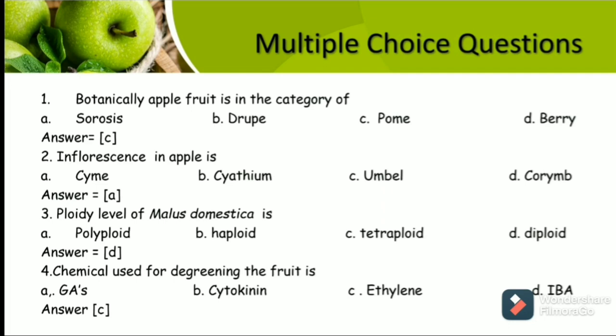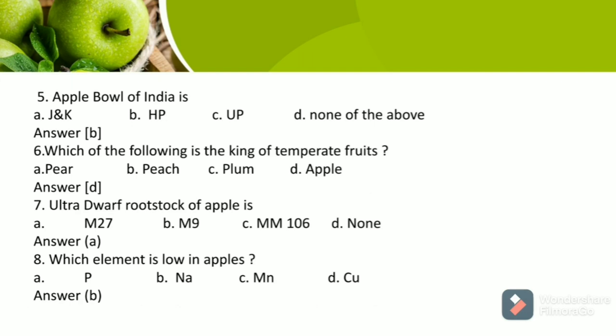Question 5: Apple Bowl of India is — options are J&K, Himachal Pradesh, Uttar Pradesh, or none of the above. The answer is Himachal Pradesh. Question 6: Which of the following is the king of temperate fruits? Options are Pear, Peach, Plum, and Apple. The answer is Apple. Question 7: The ultra-dwarfing rootstock of apple is — options are M27, M9, MM106, and none. The answer is M27. Question 8: Which element is low in apples? Options are Phosphorus, Sodium, Manganese, and Copper. The answer is Sodium. The references for this presentation are given, and I would like to thank everyone.